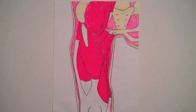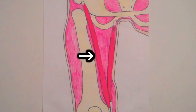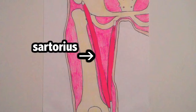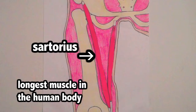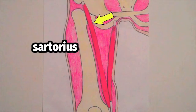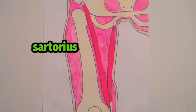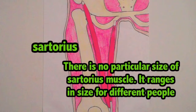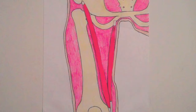Here is a diagram of the muscles in the thigh. Keep in mind this isn't all of the muscles — there are a bunch more. Let's take a look at this muscle: it's called the sartorius. It is considered the longest muscle in the human body and it runs the whole length of your thigh. There is no particular fixed size for the sartorius — its length varies depending on the person's height.